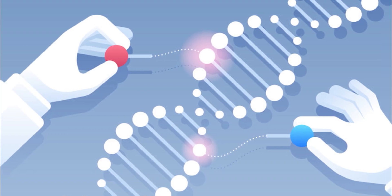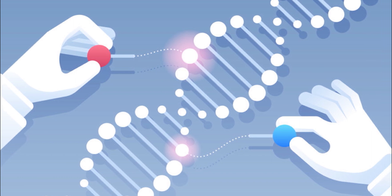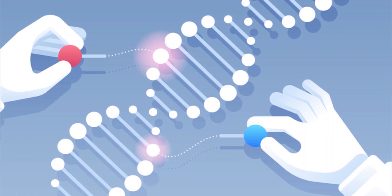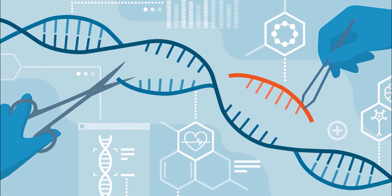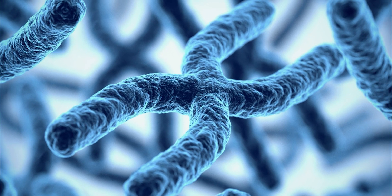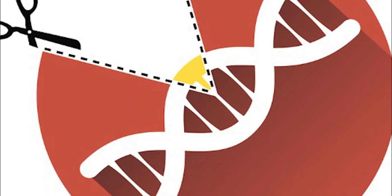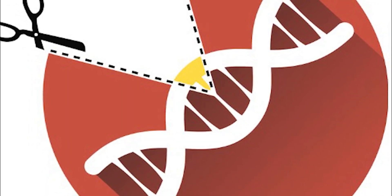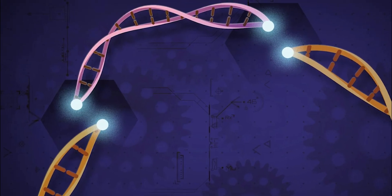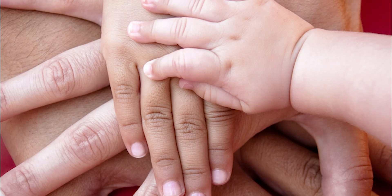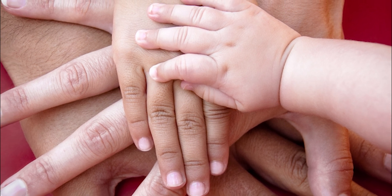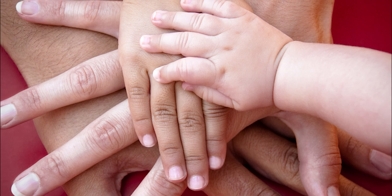However, there are also concerns about the use of CRISPR, particularly with regards to ethical considerations and the potential for unintended consequences. Making changes to the DNA sequence can have unintended effects on other genes and may even result in the creation of new genetic disorders. The ability to edit the genes of a developing embryo also raises ethical questions about the creation of so-called designer babies. The edited genes may be passed down from one generation to the next, leading to unintended consequences that may not become apparent for many years.